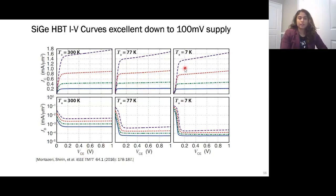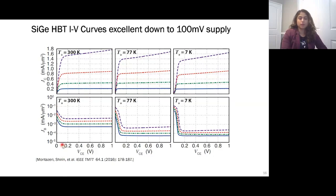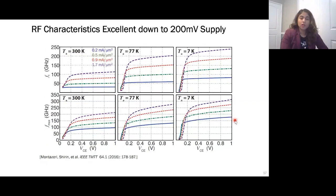Here you can see the top row is the collector current density and the bottom row is the base current density, at 7 K, 77 K, and 300 K. They have very ideal performance for the collector current density for supply voltages as low as 0.1 V. The same holds for the base current. DC-wise, this is excellent performance.